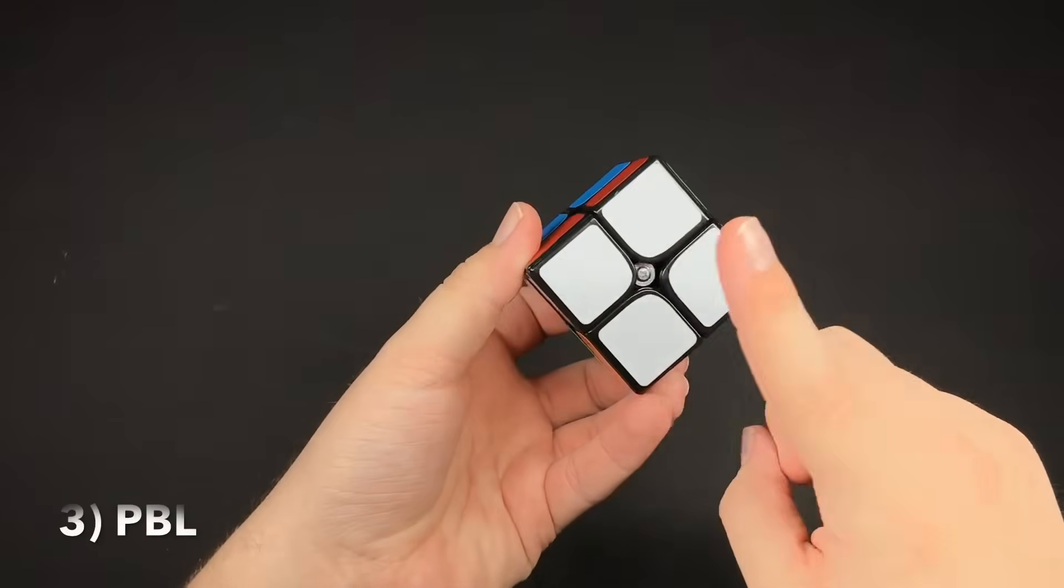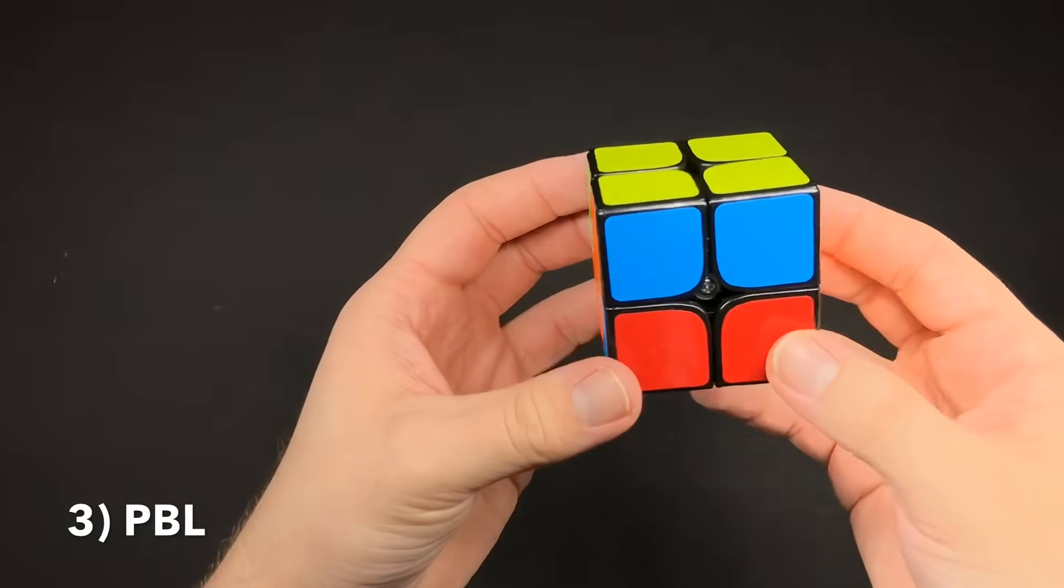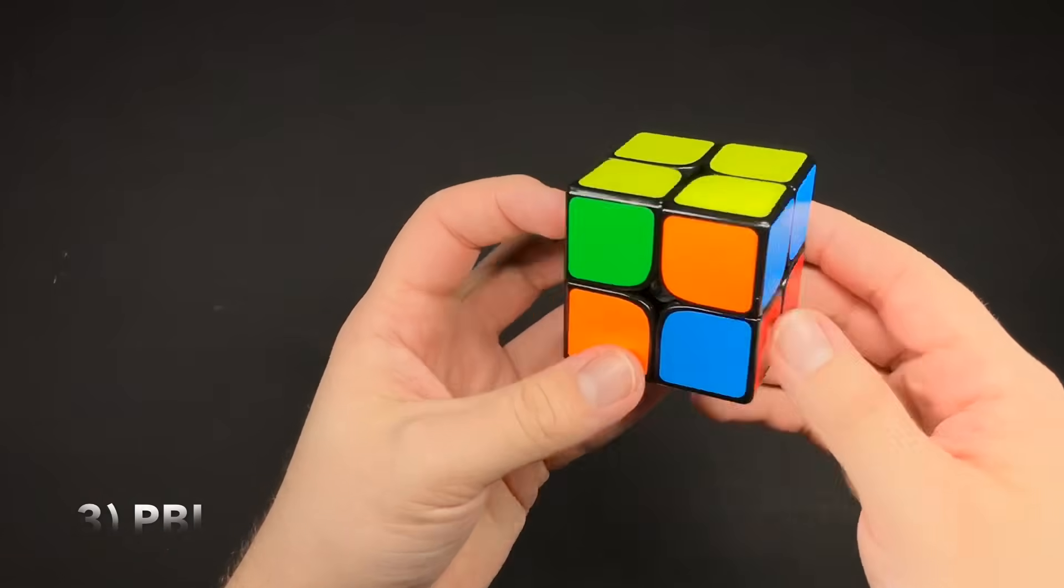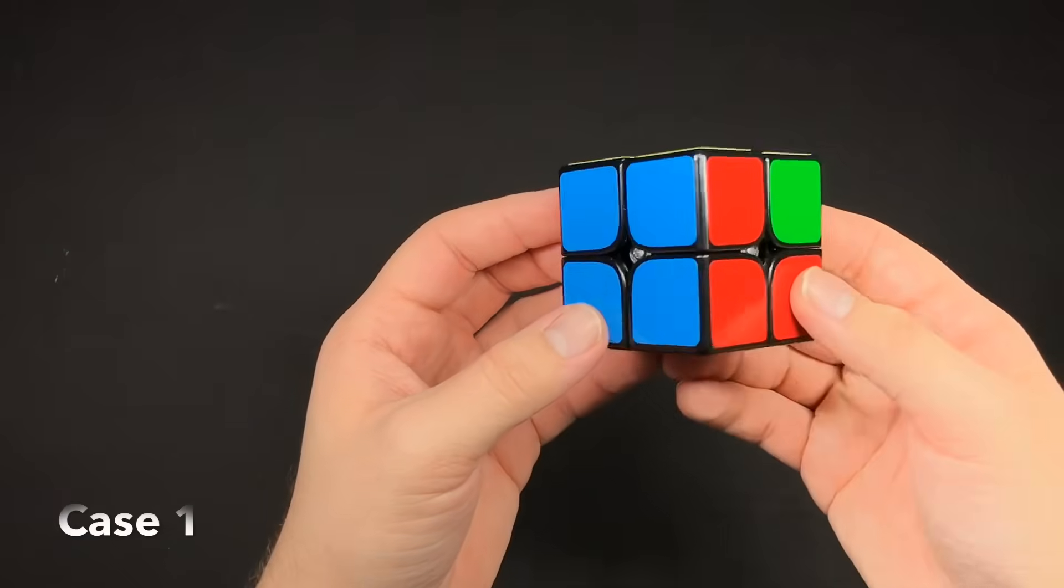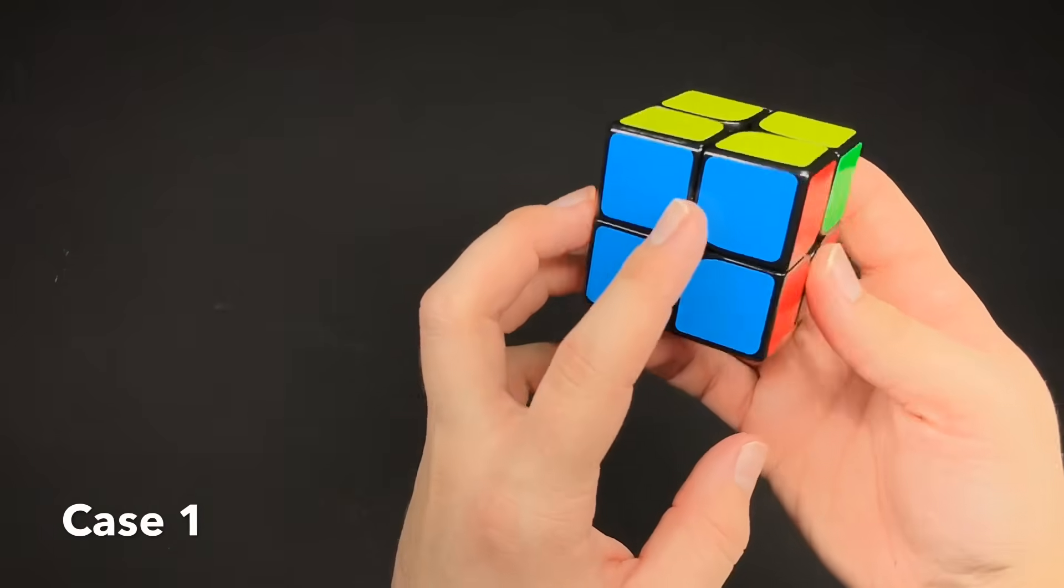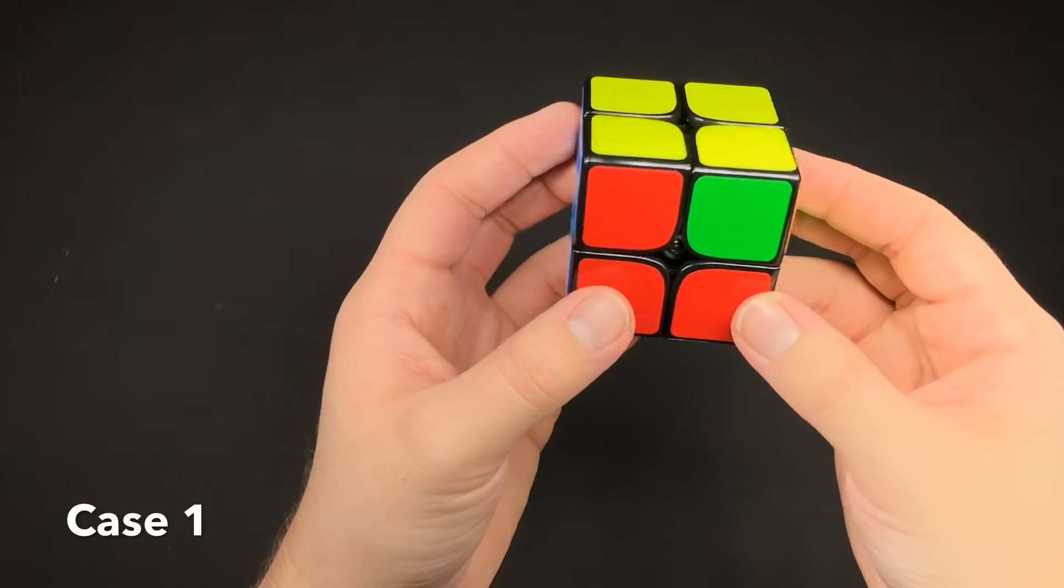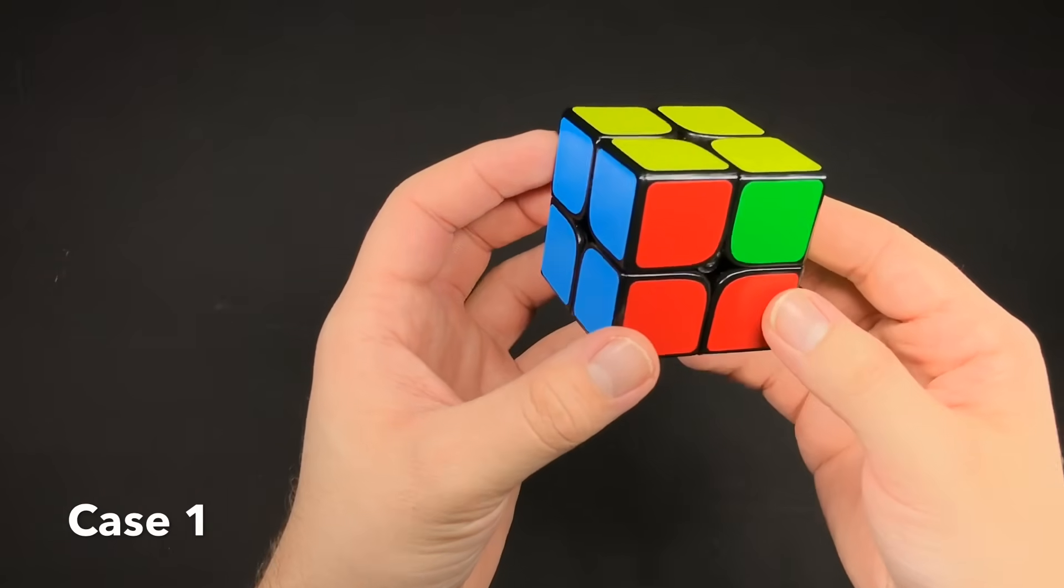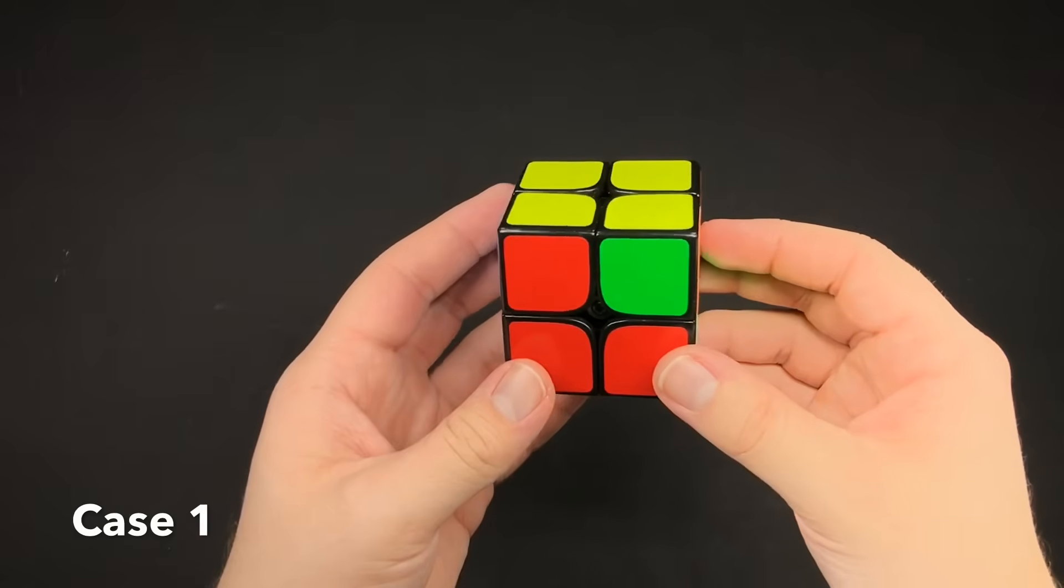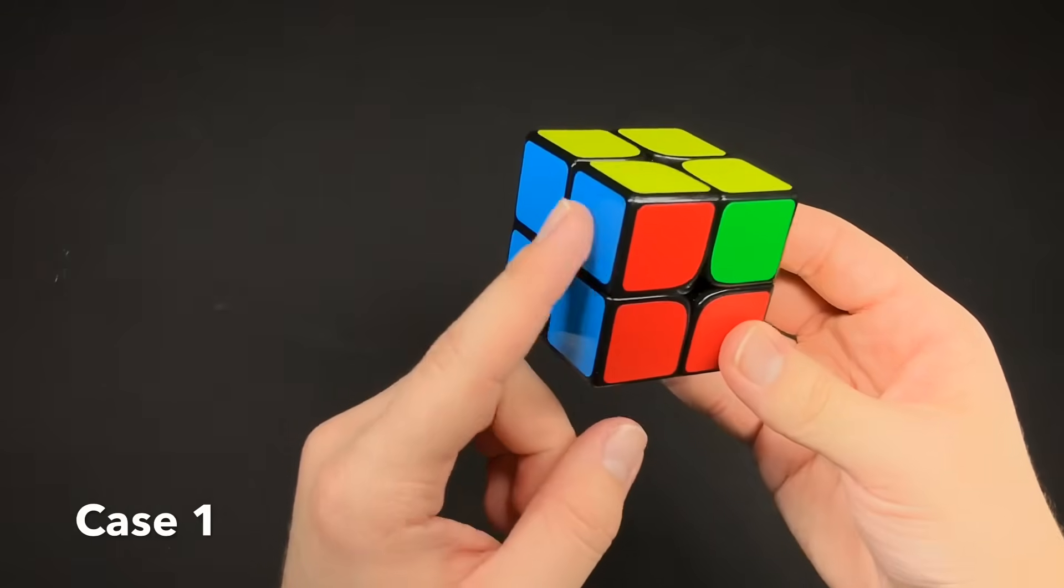Now that you have the first side and then the top side, the last step is called PBL, which stands for permuting both layers. This case is when you have the bottom side solved and then you have two colors matching in a bar, and the other two are not matching. This one would be similar to the J perm or the T perm. You'd use either algorithm, but I will show the J perm because it's shorter. It goes like this. You hold the bar on the left.